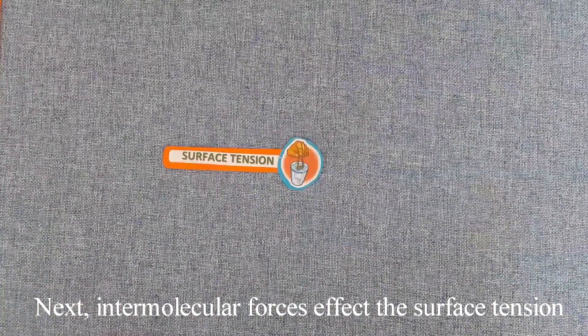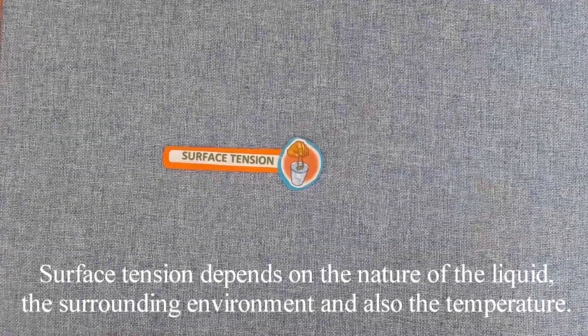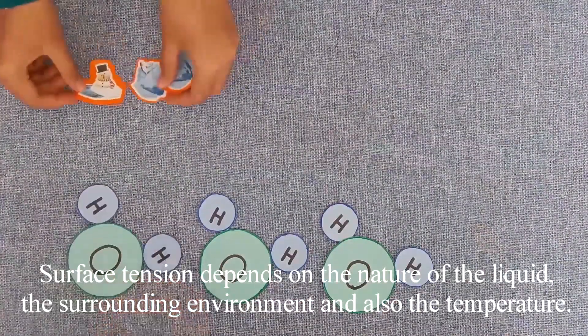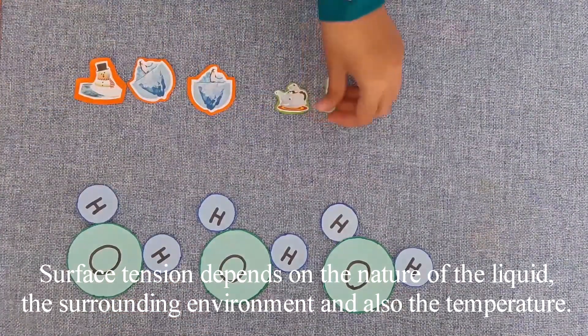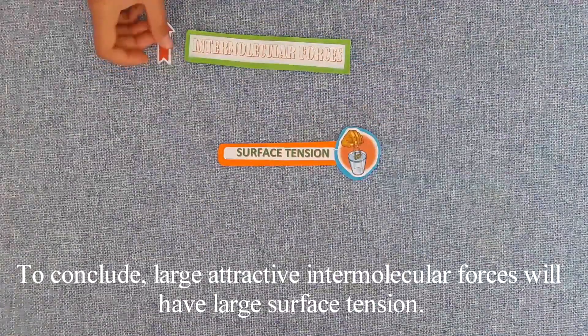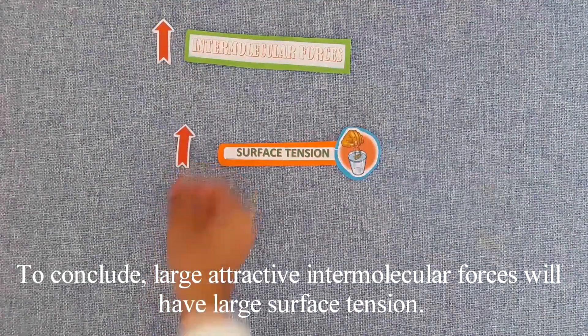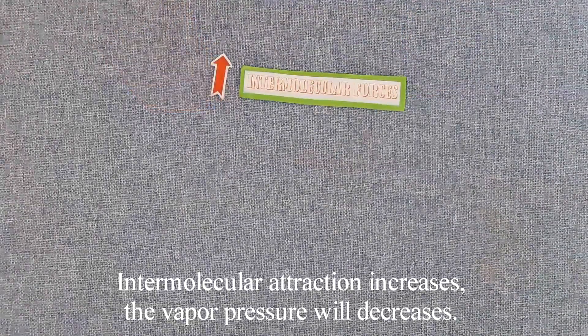Next, intermolecular forces affect the surface tension. Surface tension depends on the nature of the liquid, the surrounding environment, and also the temperature. To conclude, large attractive intermolecular forces will have a large surface tension. As intermolecular attraction increases, the vapor pressure will decrease.